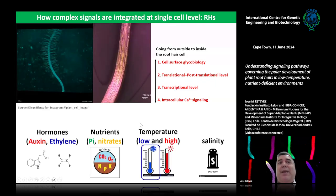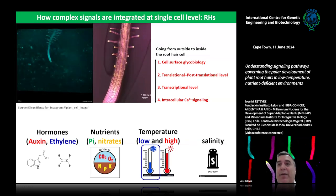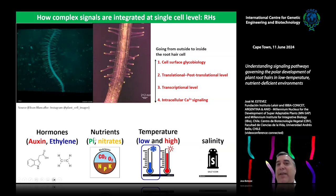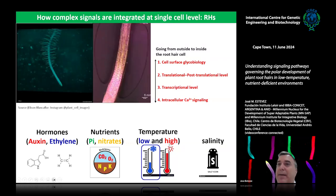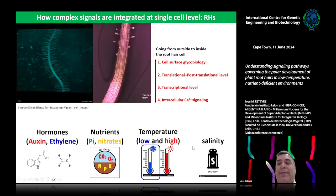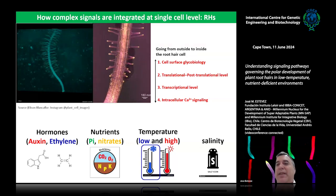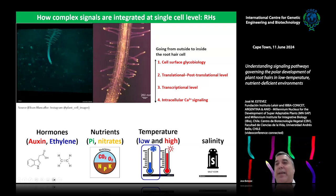In my lab we are trying to understand several environmental and endogenous inputs — hormones, nutrients. We are focused mostly on phosphate and nitrate, and today I'll talk about low temperature, but we are also starting to work on high temperature and salinity. In the field, plants face several stresses simultaneously, so we are trying to combine environmental stresses and understand whether the signaling pathways are the same or different.